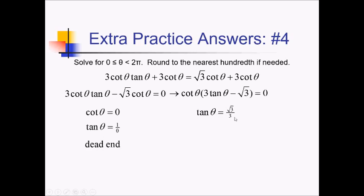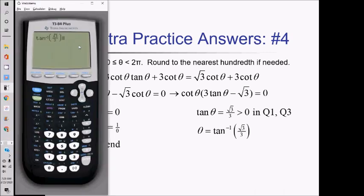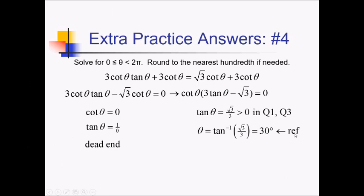So we go to the other branch: tangent of theta equals root 3 over 3. First thing I note is that this is a positive value for tangent — the slope of the angle is positive — so we are in quadrants 1 and 3 for our angles. Doing tangent inverse of root 3 over 3, that gives us 30 degrees. 30 degrees is a reference angle that helps us get our quadrant 1 and 3 angles. For quadrant 1, 30 degrees is also the quadrant 1 answer. For quadrant 3, we go 30 degrees into quadrant 3, so 180 plus 30 gives us 210 degrees.